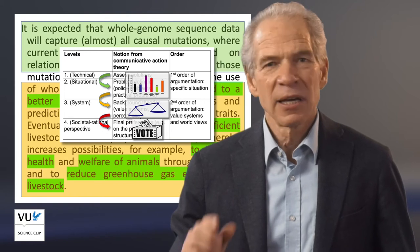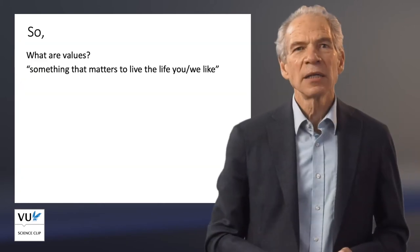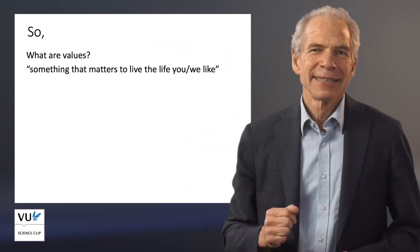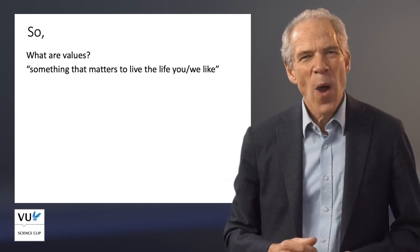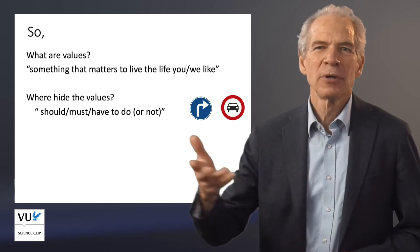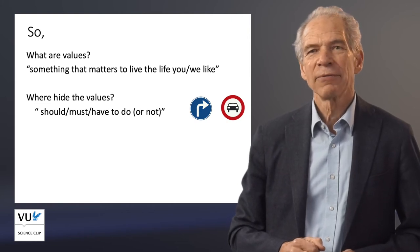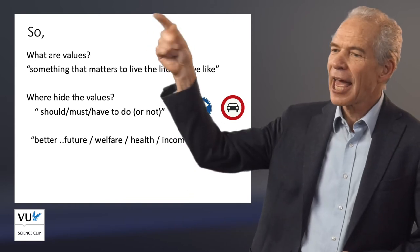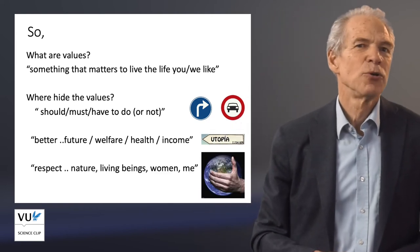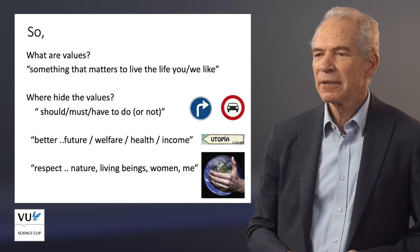So what are values? Something that matters to live the life you and we like — a very general approach. Where do values hide? You have to look for words that deal with 'should,' 'must,' 'have to do,' or 'not to do' — directional words. There are also words that refer to the future: future welfare, health, income. And also words that refer to respect — you should respect something, or you like to respect something: nature, living beings, women, me.